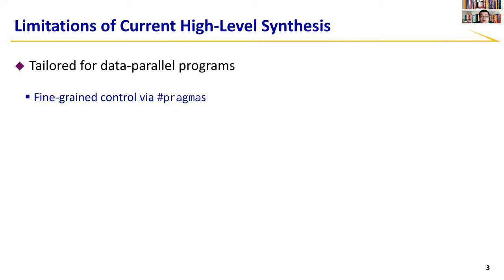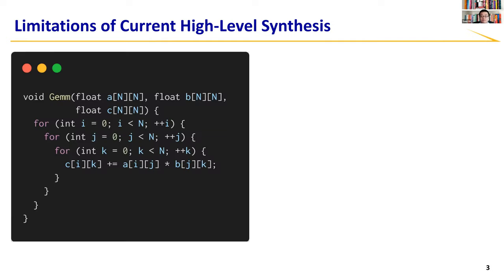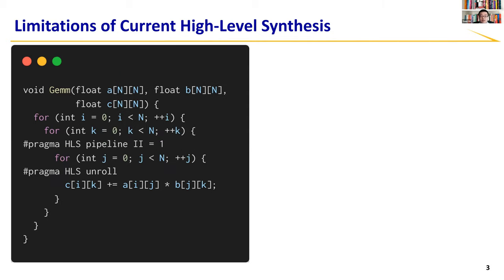However, current HLS still has its limitations. One problem is that HLS tools are heavily tailored for data parallel programs, where there are fine-grained loops that can be pipelined or unrolled. Data parallelism can often be easily implemented using pragmas without convoluting the code. For example, for general matrix multiplication whose original implementation is a nice nested loop, we can do some loop exchange and apply pragmas to exploit data parallelism.